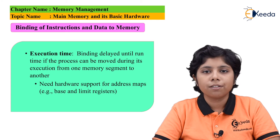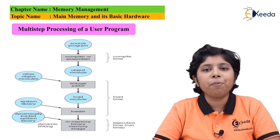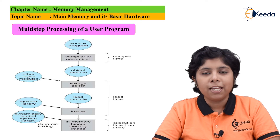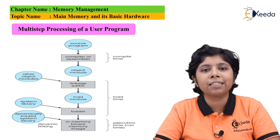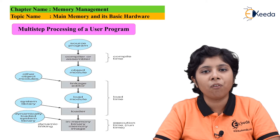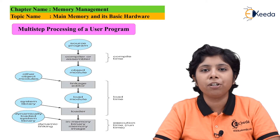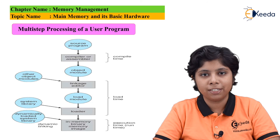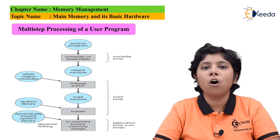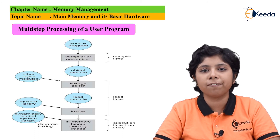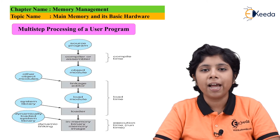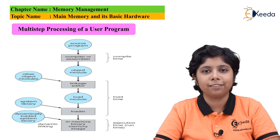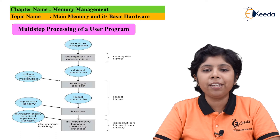This prevents a process from modifying or updating data structures used exclusively by the operating system kernel. The base and limit registers can only be set by the operating system, as only the kernel executes privileged instructions. Therefore, the operating system is the only one which can define the values of the base and limit registers, and no user process is allowed to change the content of these registers.